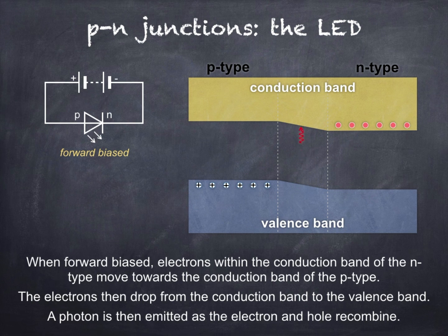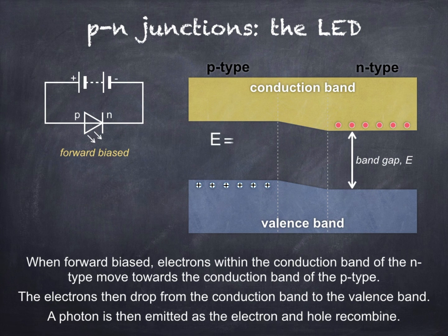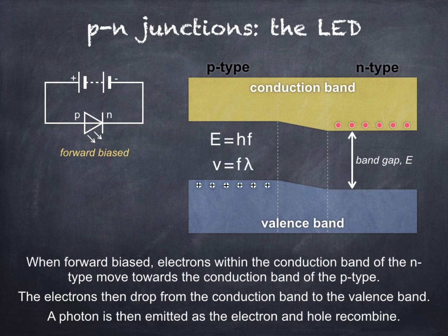Now, you might have a question which asks you to calculate the wavelength or frequency of the light emitted by the LED. This depends on the band gap — that's the energy between the valence band and the conduction band. To calculate the photon's frequency, we use the equation E = hf, where E is the band gap in joules, h is Planck's constant (found in the datasheet at the front of the exam), and f is frequency in hertz. To calculate wavelength, we then use the wave equation v = fλ, where v is the speed of light in air — 3 × 10⁸ metres per second, also in the datasheet — f is frequency, and λ is wavelength in metres. If you're asked to determine the actual colour of the light emitted by the LED, all you have to do is compare your calculated wavelength with those given in the datasheet.